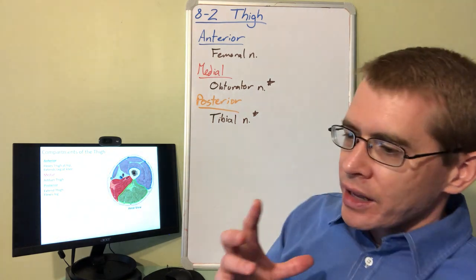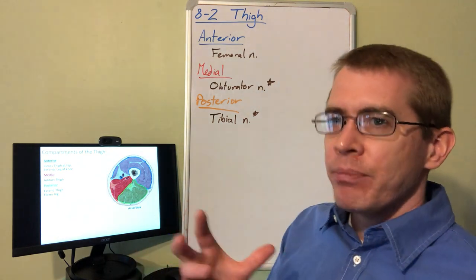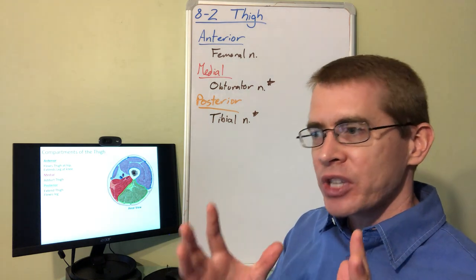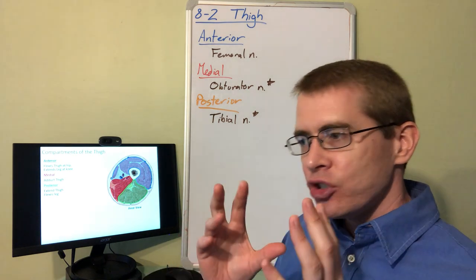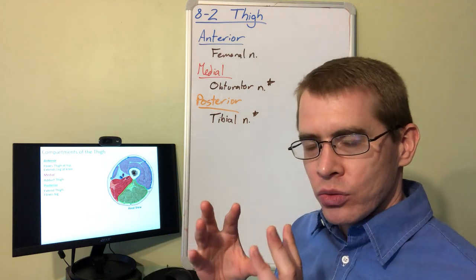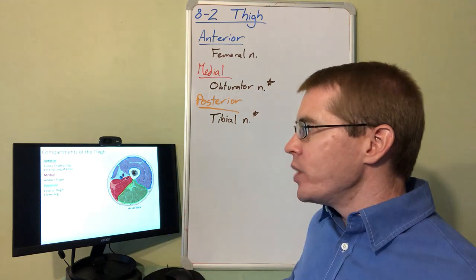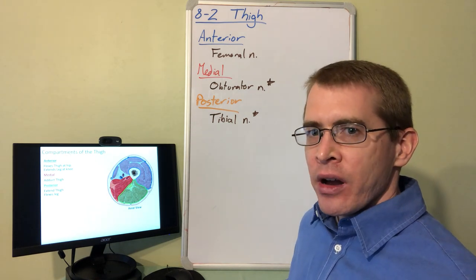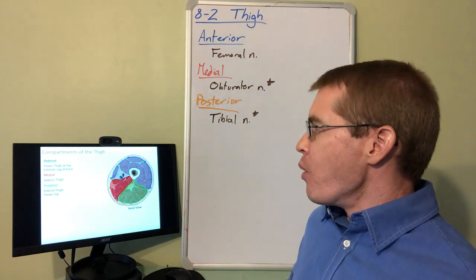Just like in the upper limb, we talked about the compartments of the arm. We're going to talk about the compartments of the thigh. This helps us categorize these muscles into actions and nerve innervations. We have an anterior, a medial, and a posterior compartment within the thigh.